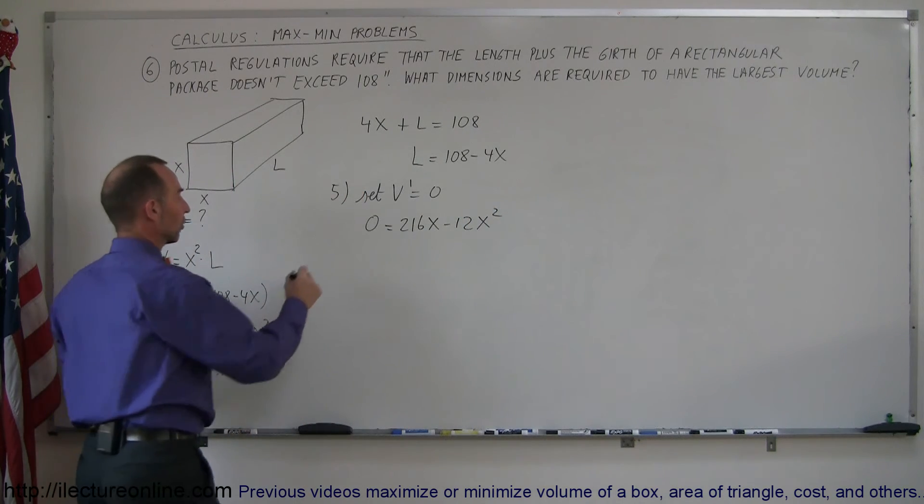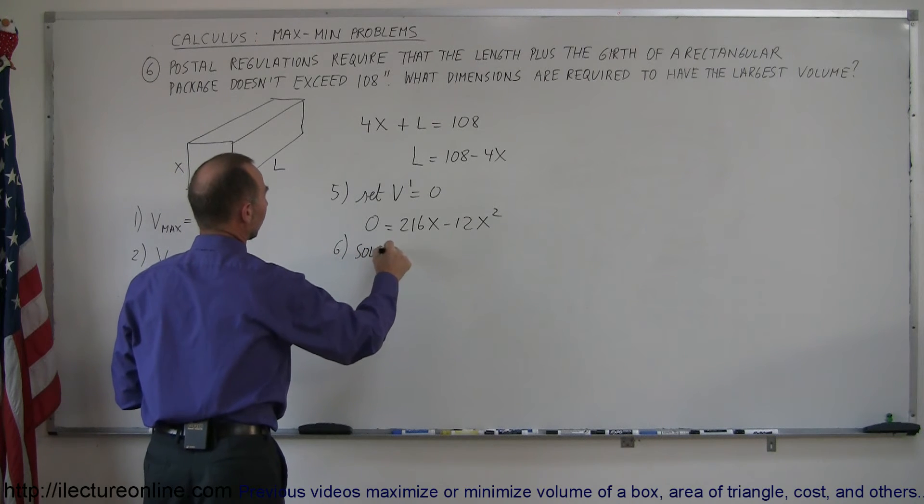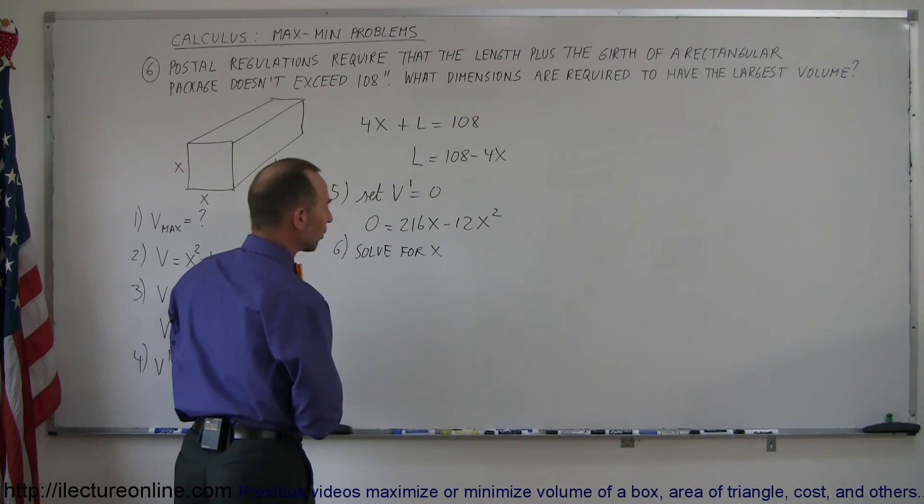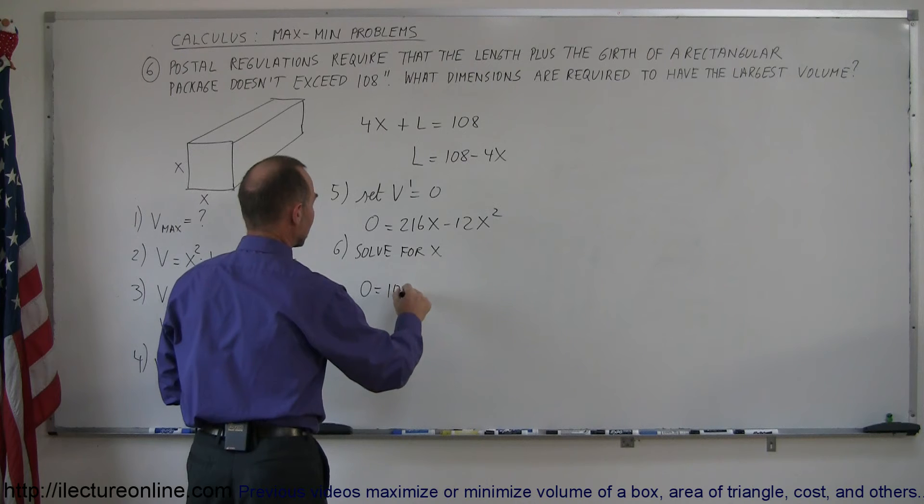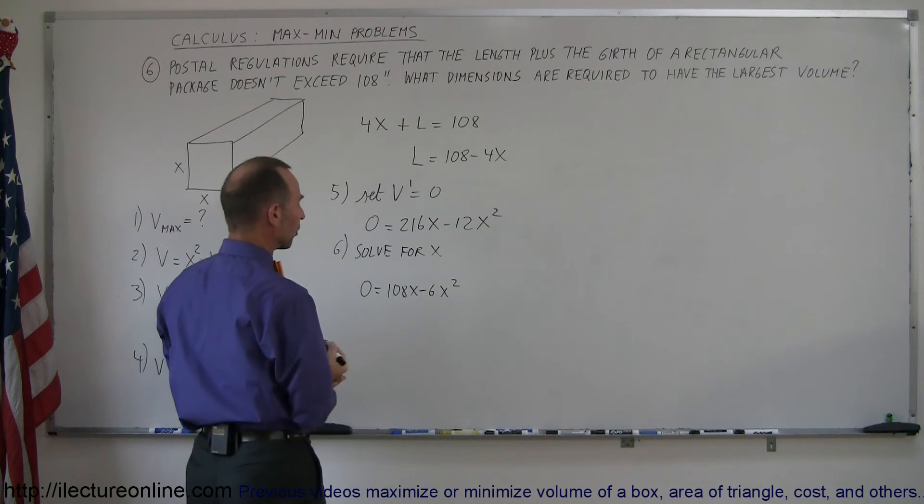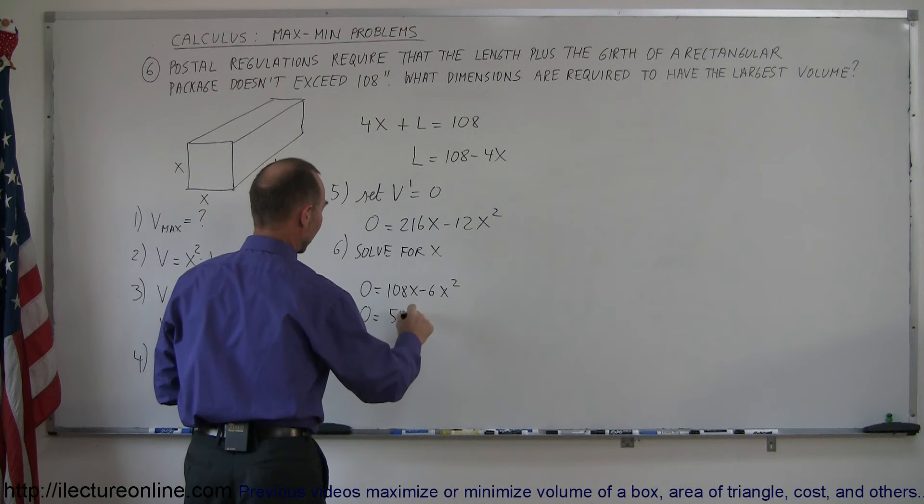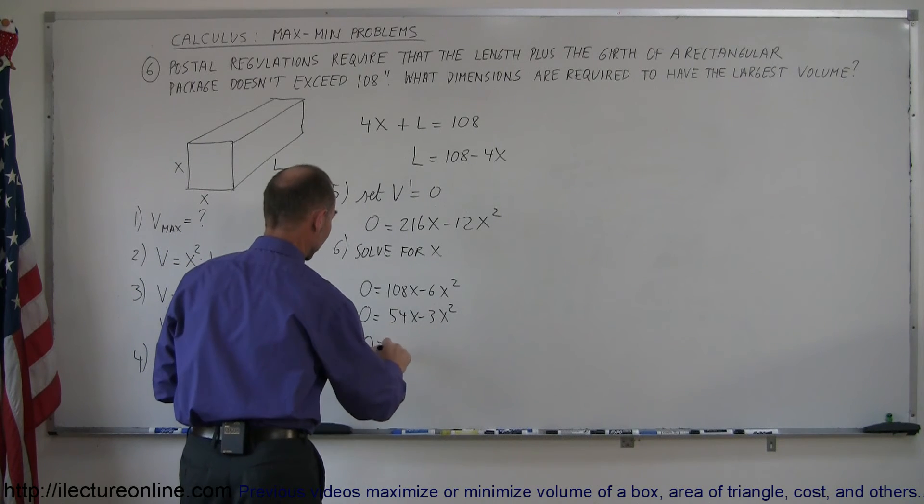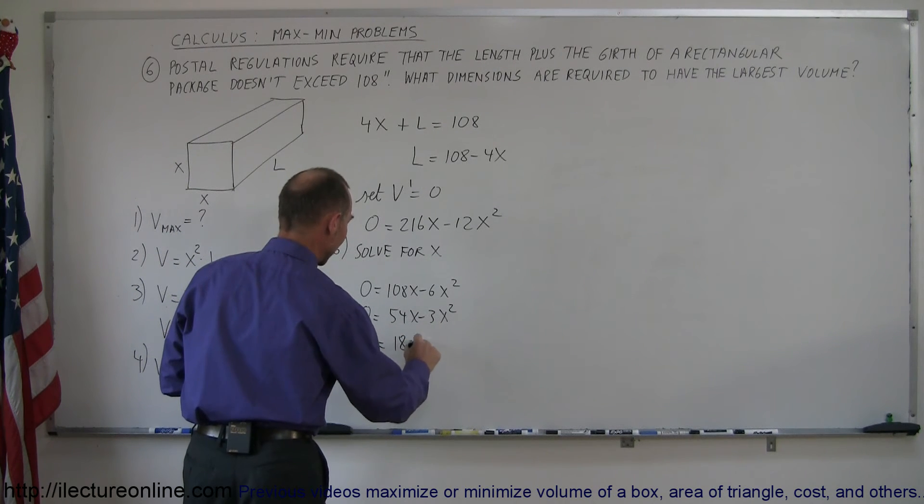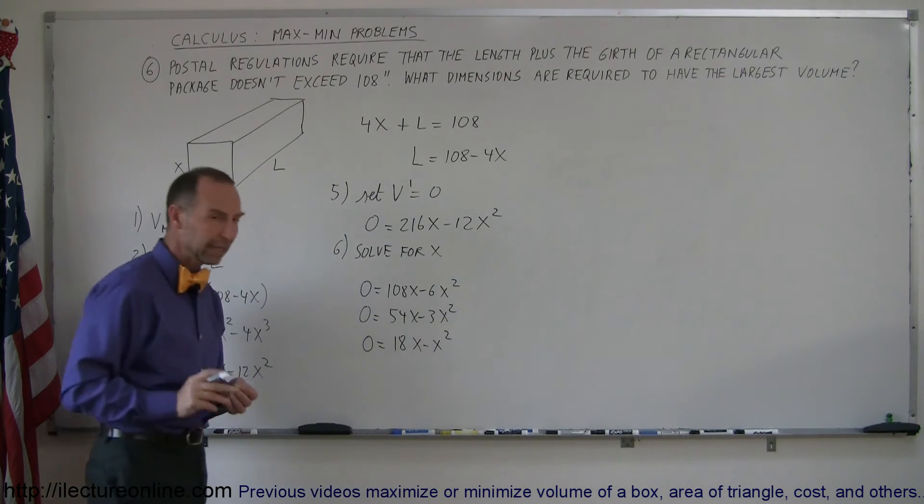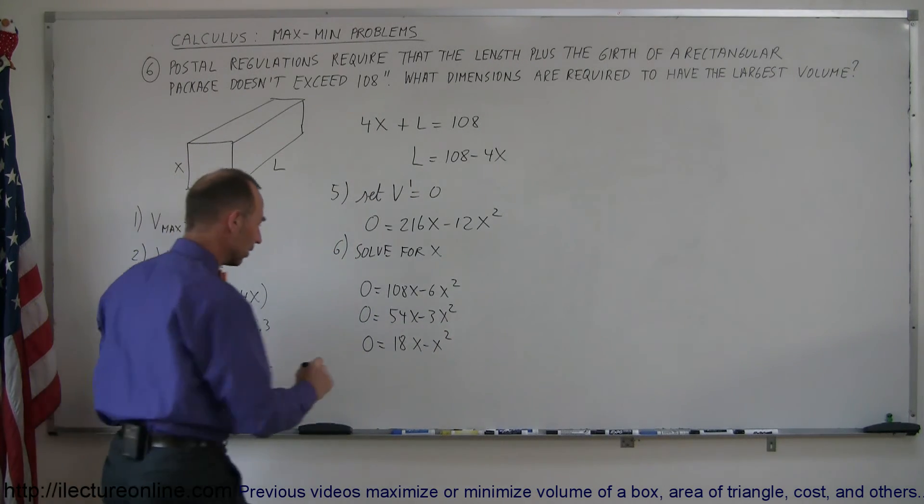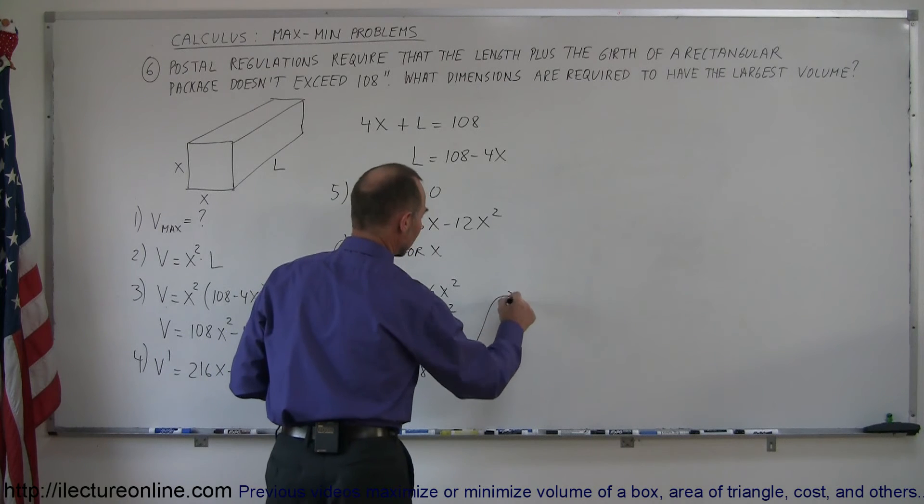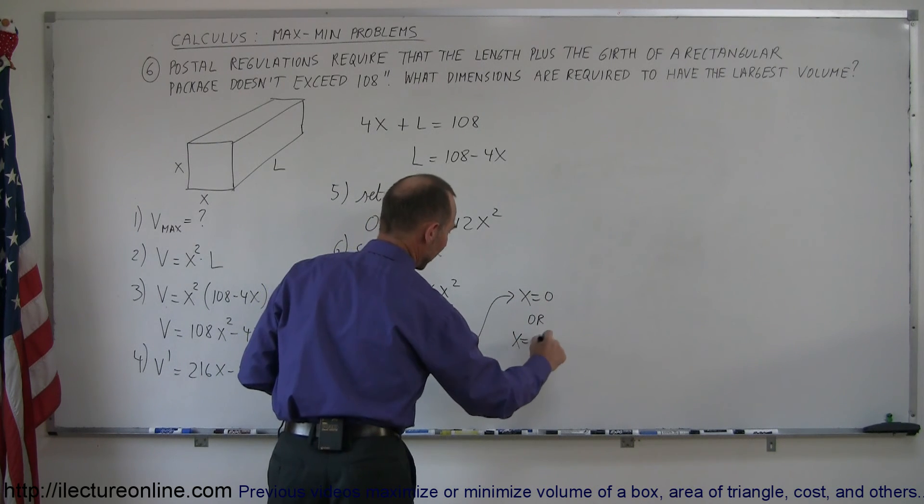And now we have to solve that for x. So step six, solve for x. We can divide both sides by two, so we have zero is equal to 108x minus 6x squared. Divide both sides by two again, we get zero is equal to 54x minus 3x squared. And that's divisible by three, so zero is equal to 18x minus x squared. Now we factor out an x, so we have zero is equal to x times 18 minus x, which means that either x is equal to zero or x is equal to 18.